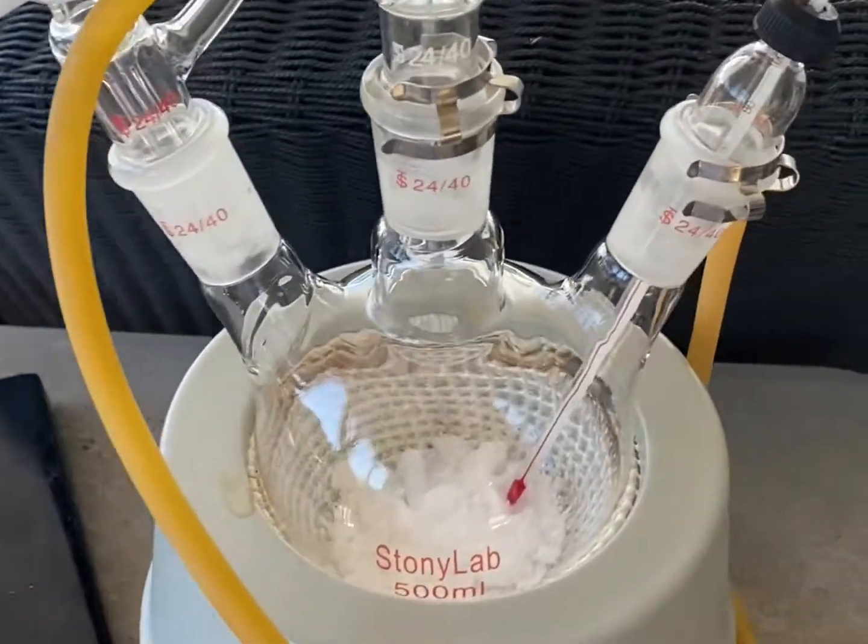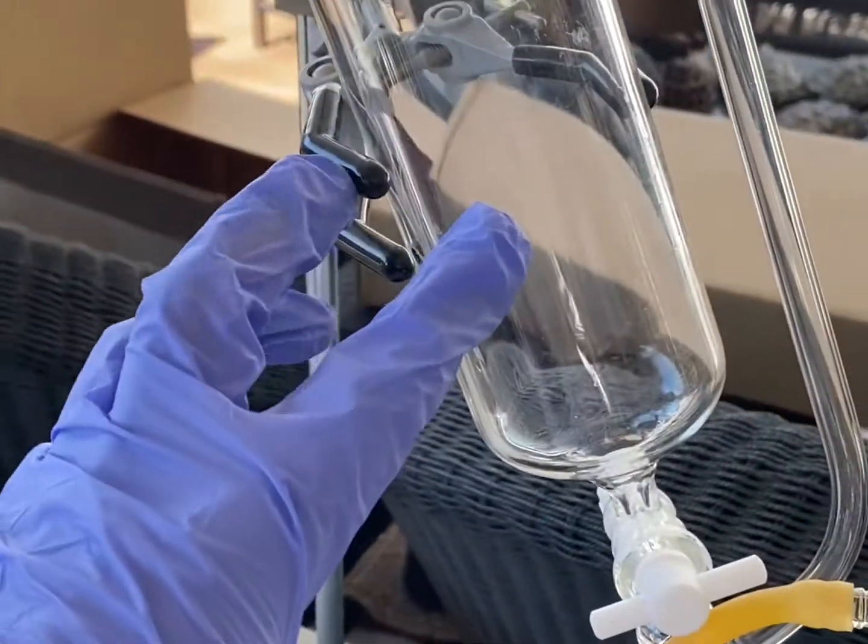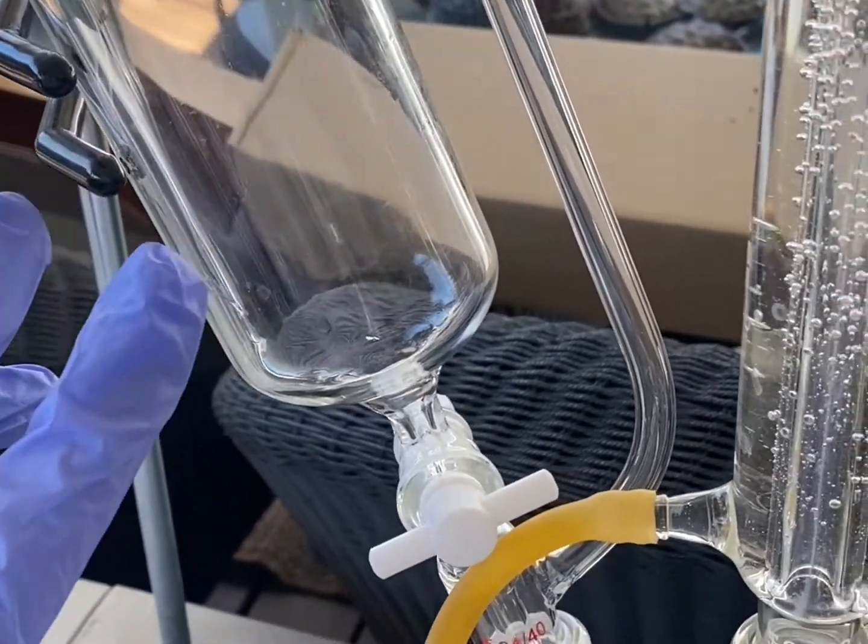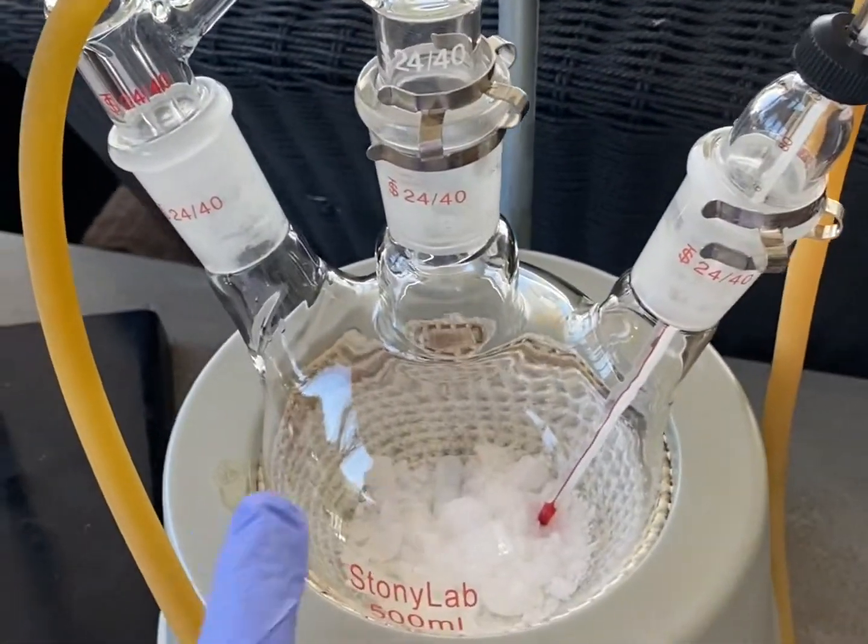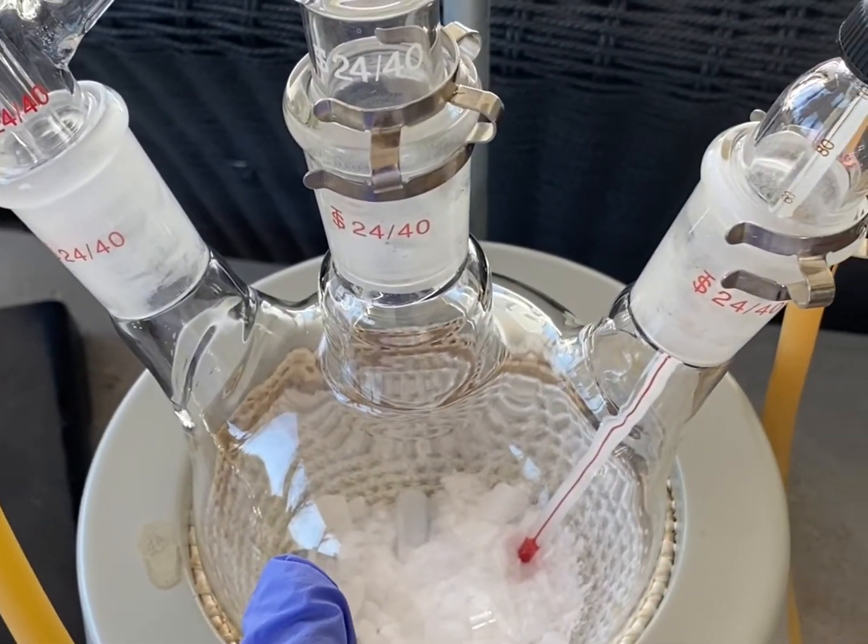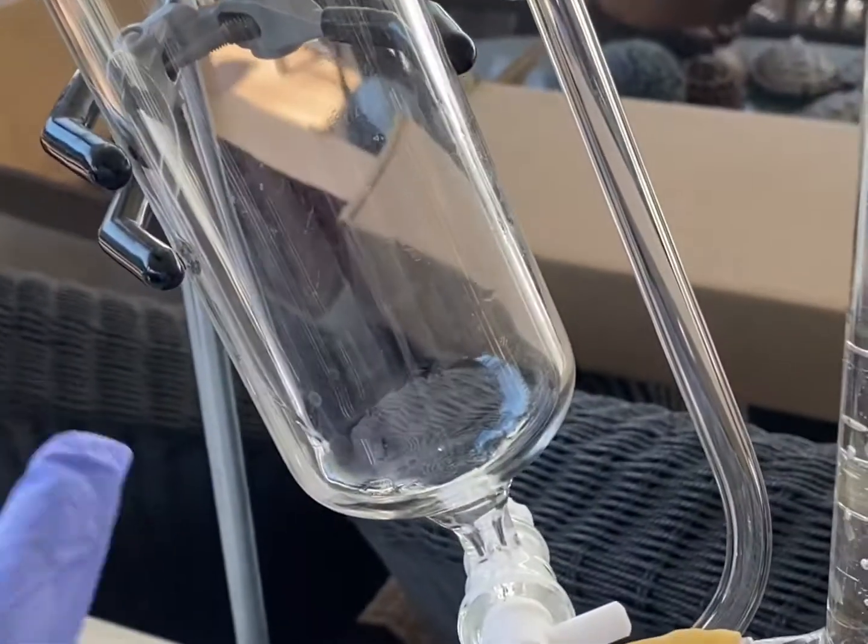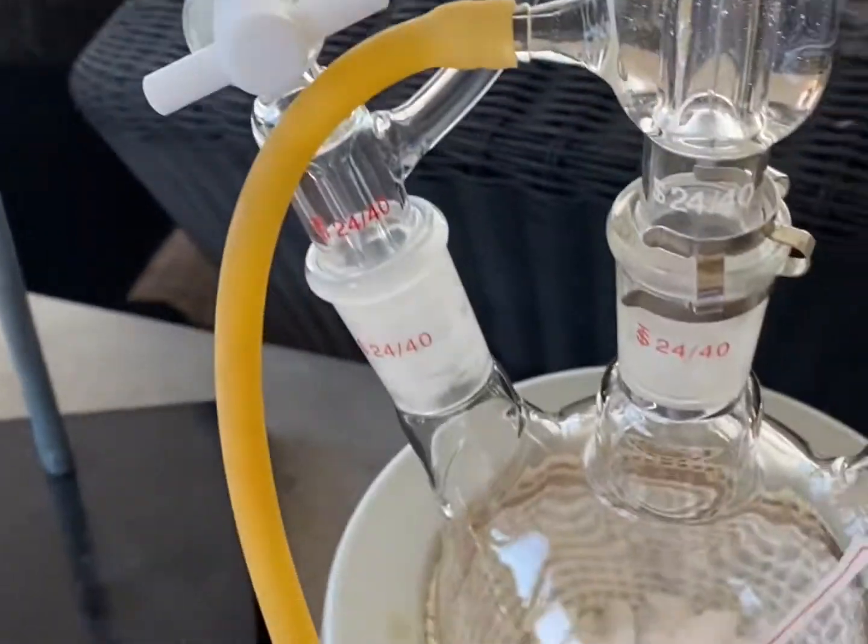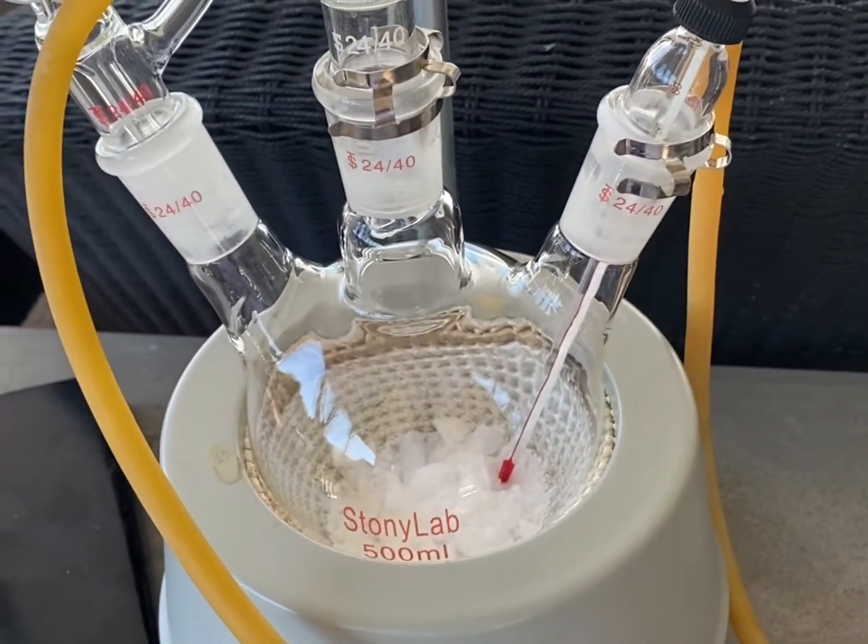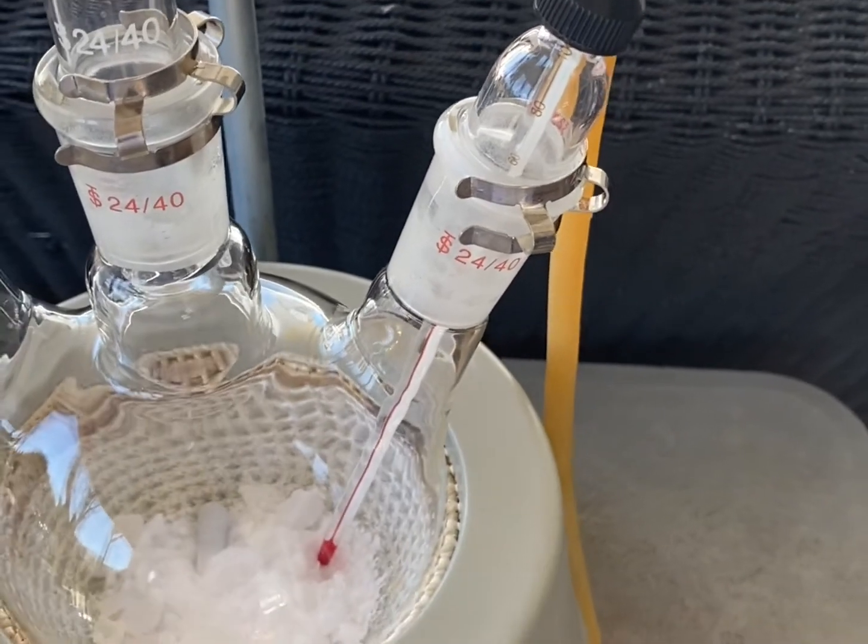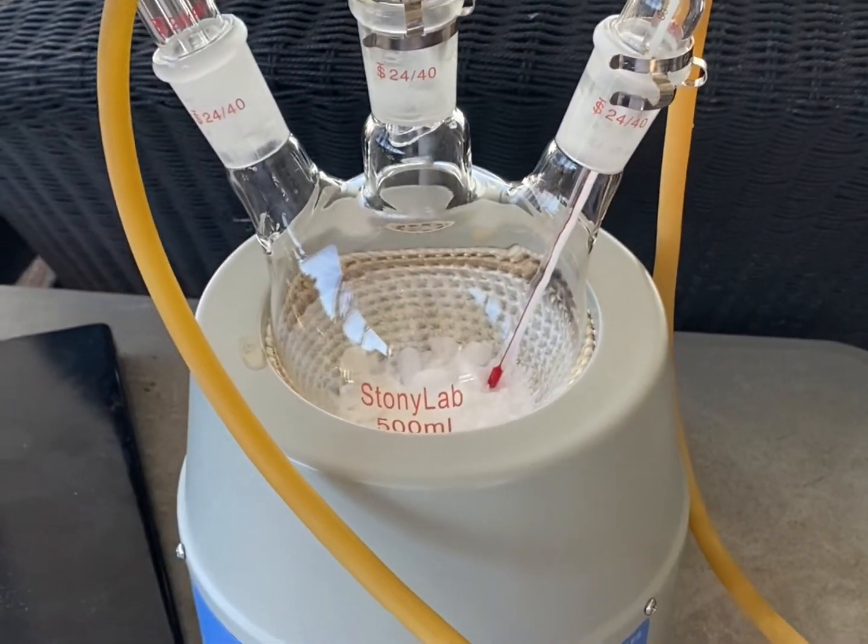To do that, we're going to load this with 45 ml of 93% sulfuric acid, and we're going to start heating this. Once it melts and gets to about 160 degrees Celsius, we will drip in the sulfuric acid over the course of about 10 minutes, and then let it stir for an additional 5 minutes at 160 degrees Celsius, and then let the mixture cool down.